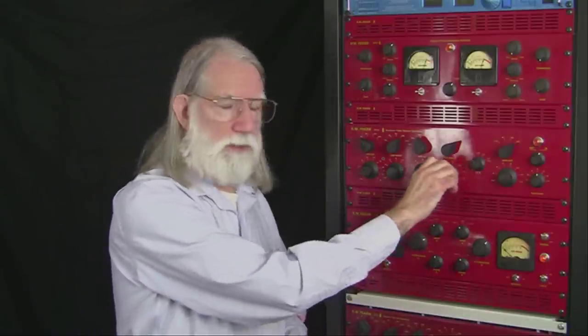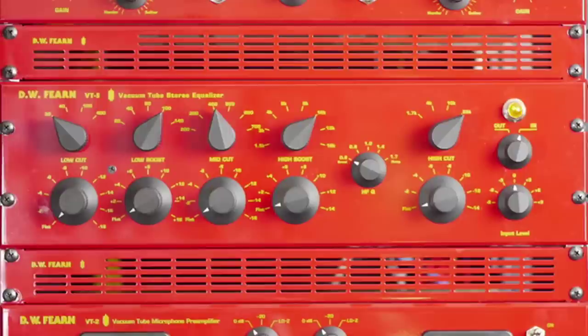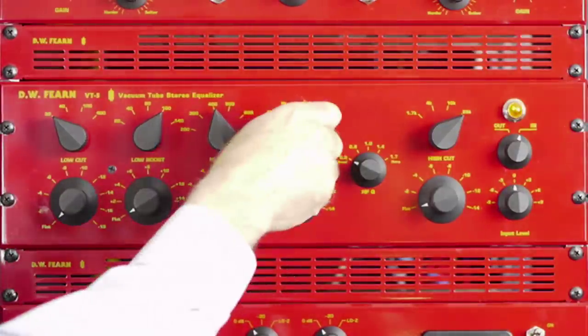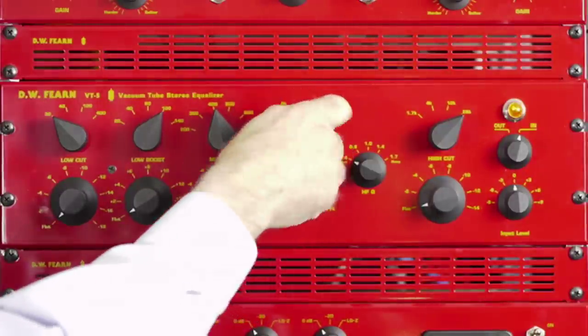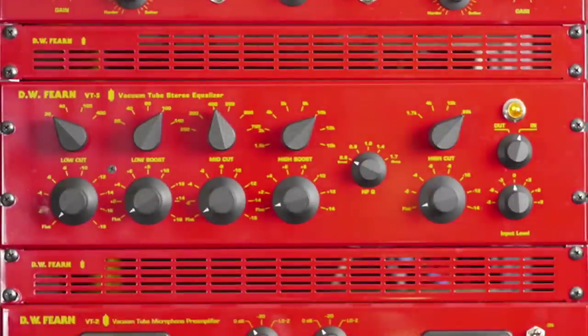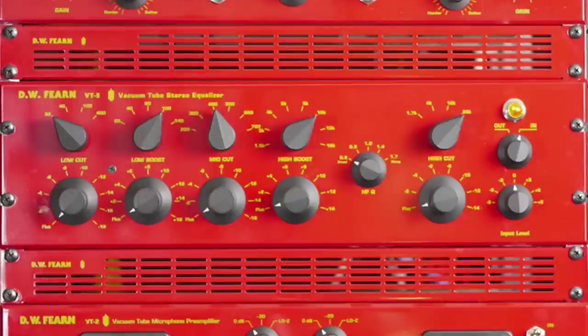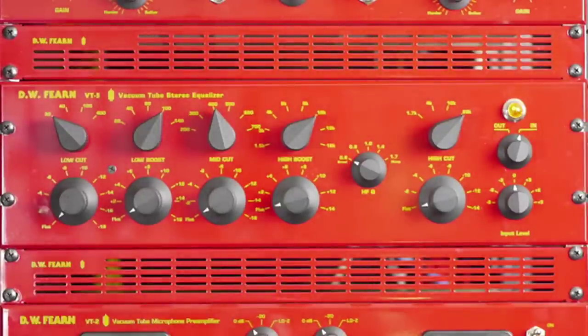The next one is called high boost. This is the only control on the VT4 or VT5 that actually has three controls involved. You have your control where you can adjust the amount of boost, a control where you can adjust the frequency that you want to use, and a third control which adjusts the bandwidth or Q of the equalizer on that particular high frequency boost band.